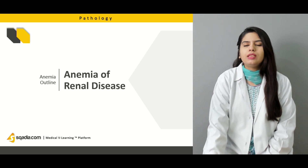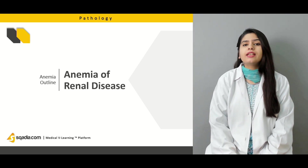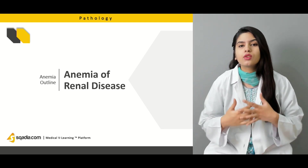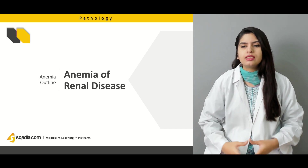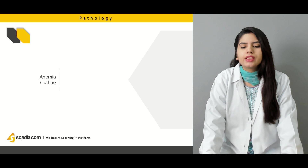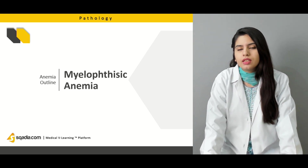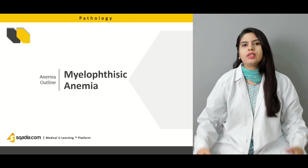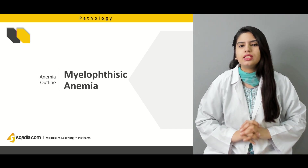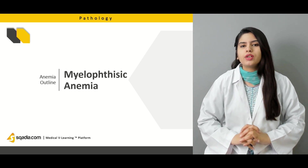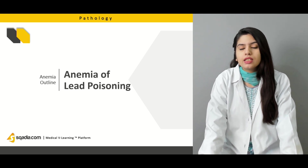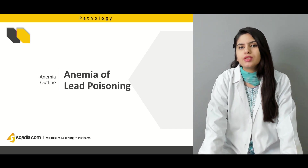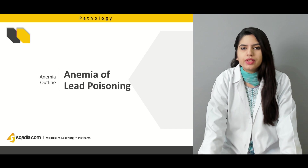Then we will discuss about the anemia of renal disease. We will see how the kidney is important in causing anemia, what is the role of erythropoietin, and how this anemia of renal disease appears morphologically. Then we will discuss about myelophysic anemia — what it actually is, what type of anemia it is, and we will also discuss its important features and clinical features. Then we will discuss about the anemia of lead poisoning — how lead is involved in causing anemia and how it affects the production of heme.